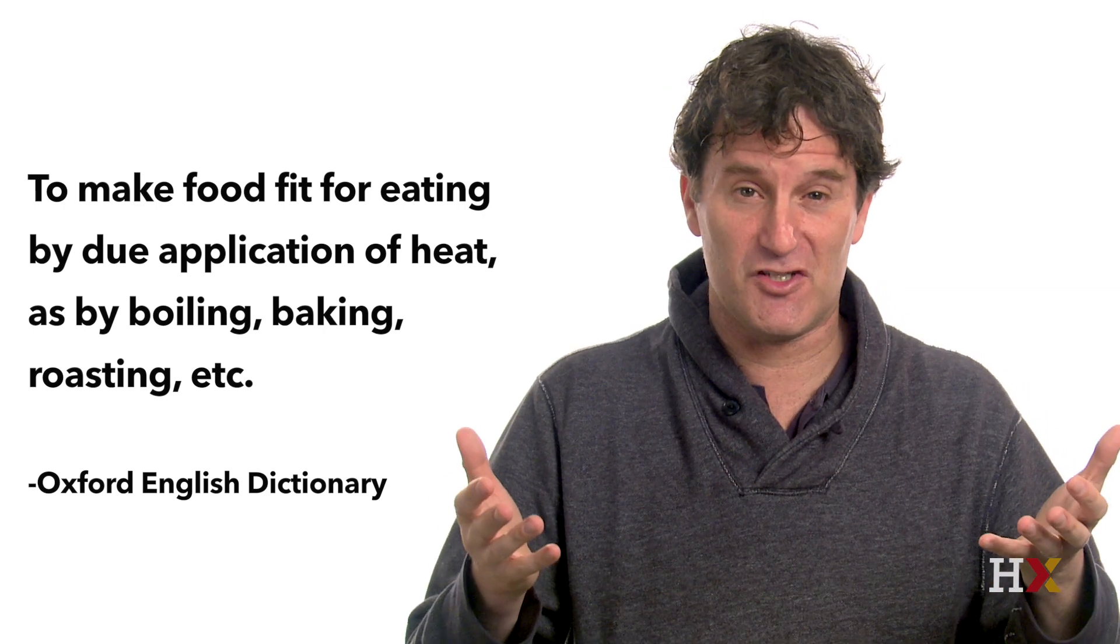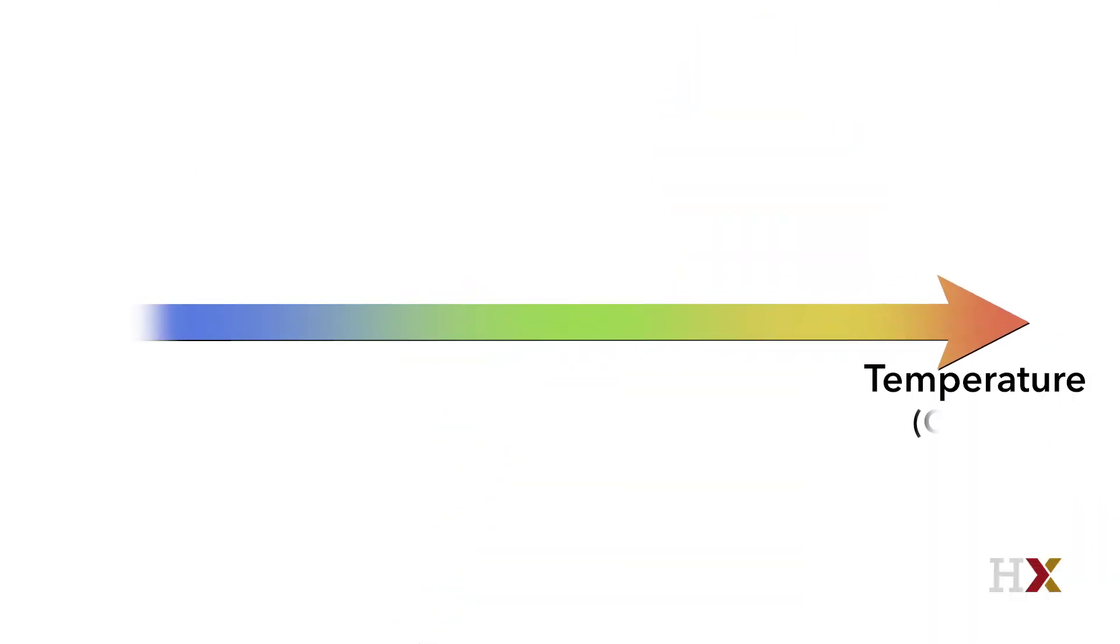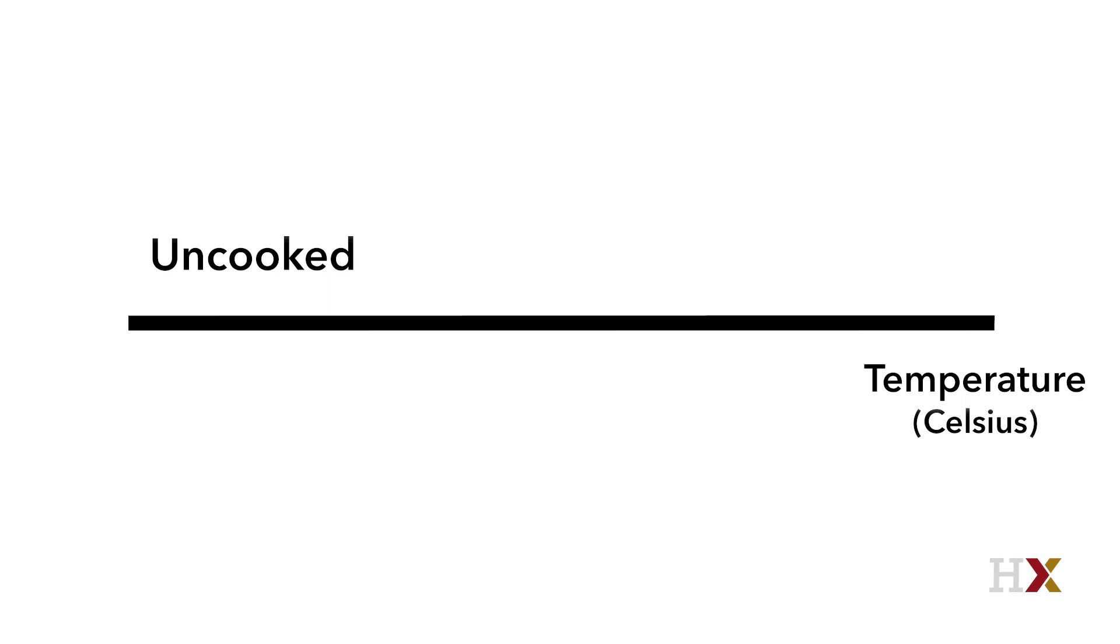You'll recall that we recast that definition as a plot, because we're scientists and we like to make plots. So we plotted the temperature on an axis and drew a line, and said below some critical temperature the food is uncooked, and above that critical temperature the food is cooked. We're also able to put different foods on that plot.